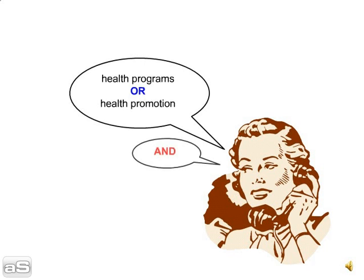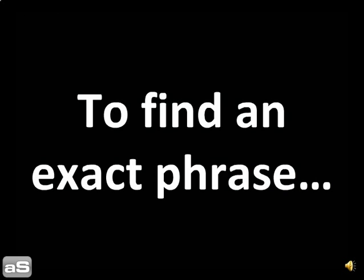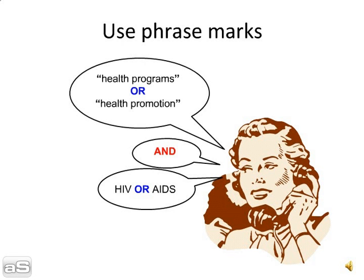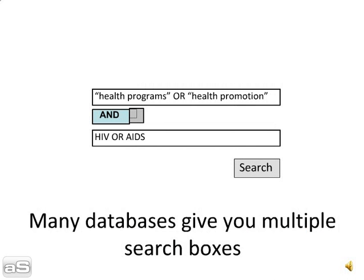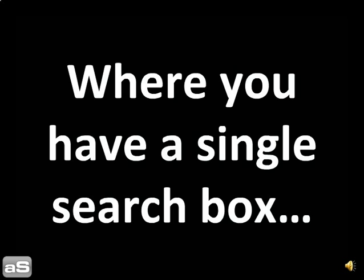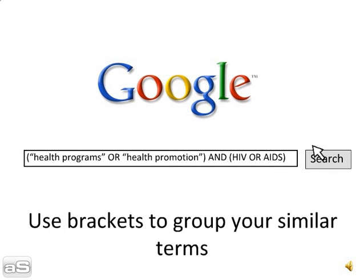But they're best used together. Use OR to combine all your similar terms, and AND to join your concepts. To find an exact phrase, enclose your terms in phrase marks. In a database, it looks something like this. Where you have a single search box, use brackets to group your similar terms together.